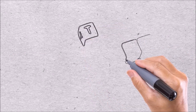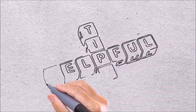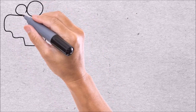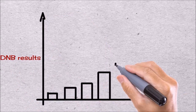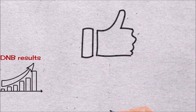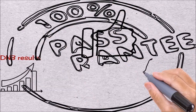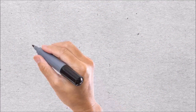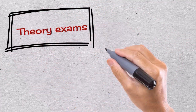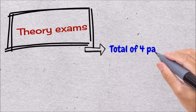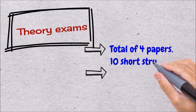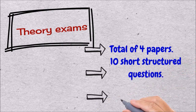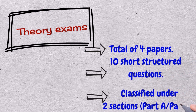If you have an exam coming up, I think you will find this particularly helpful. I would highly recommend you to kindly share it with fellow colleagues who are also preparing. DNB results are improving year by year, and a decent preparation should always fetch very good results. The final DNB theory examination will have a total of 4 papers, and each paper will contain 10 short structured questions classified under two sections: Part A and Part B.